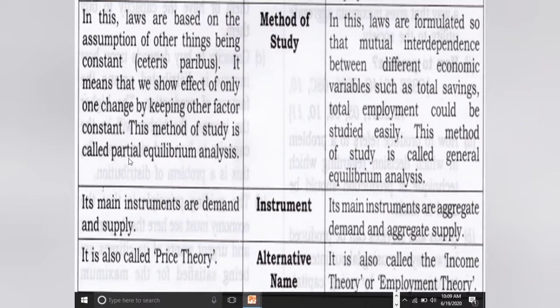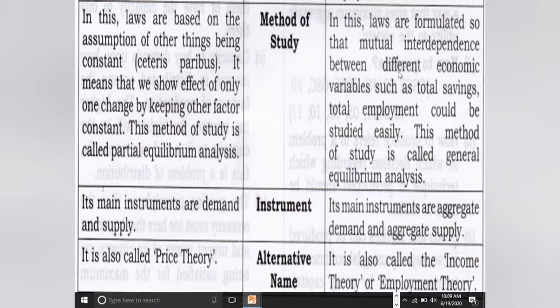जैसे law of demand में भी कुछ assumptions आते हैं। Macro में laws are formulated so that mutual interdependence between different economic variables — such as total saving, total employment — could be studied easily। इसे general equilibrium analysis कहते हैं। Macro में हम देखते हैं कि different variables जैसे total saving और total employment किस तरह से interdependent और related हैं।